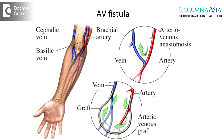Dialysis access via AV fistulas involves joining a native artery to a neighboring vein and creating a high-flow channel through that vein, so that the dialysis technician can insert needles into those veins, draw the blood out into the dialysis machine, cleanse the blood, and then send it back to the patient.